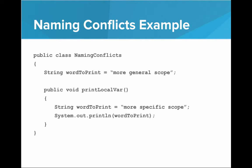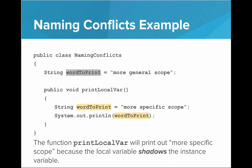Let's see an example of this. Here we have an instance variable named wordToPrint. wordToPrint should exist throughout the entire class and inside every single method. But in the method printLocalVar, we have a new string wordToPrint defined as a local variable of this method. So when we go to print out wordToPrint, which word will be printed? Since the local variable has a more specific scope, it will shadow the instance variable wordToPrint. So the instance variable no longer exists inside that method, and it will print out "more specific scope".